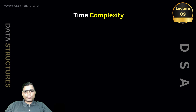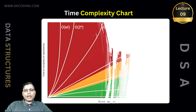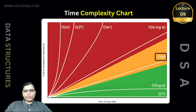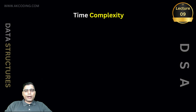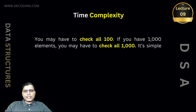Time complexity of linear search — is it efficient? Linear search is not the fastest algorithm out there, but it gets the job done, especially for smaller arrays. The time complexity of linear search is O(N), where N is the size of the array. This means in the worst case the algorithm has to check each element once, so the time taken grows linearly with the size of the array. If you have 100 elements, you might have to check all 100. If you have 1000 elements, you may have to check all 1000. It's simple, but not always the best choice for huge data sets.